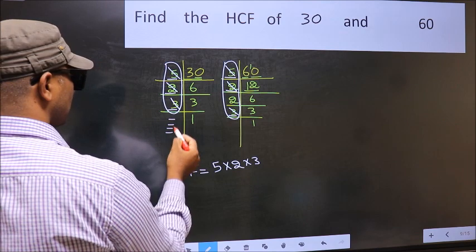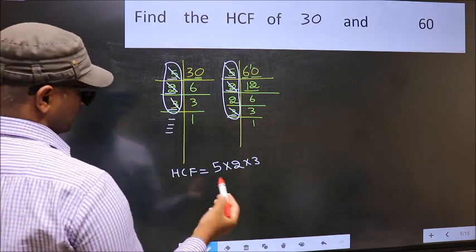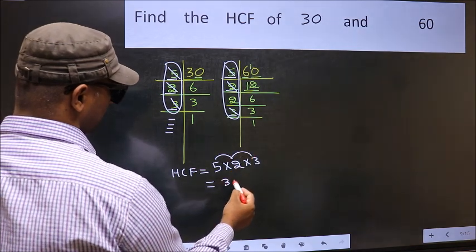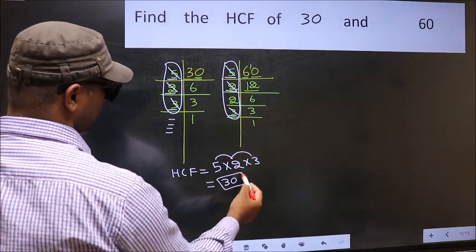No more numbers have been left out. So our HCF is 5 into 2, 10 into 3, 30 is our HCF.